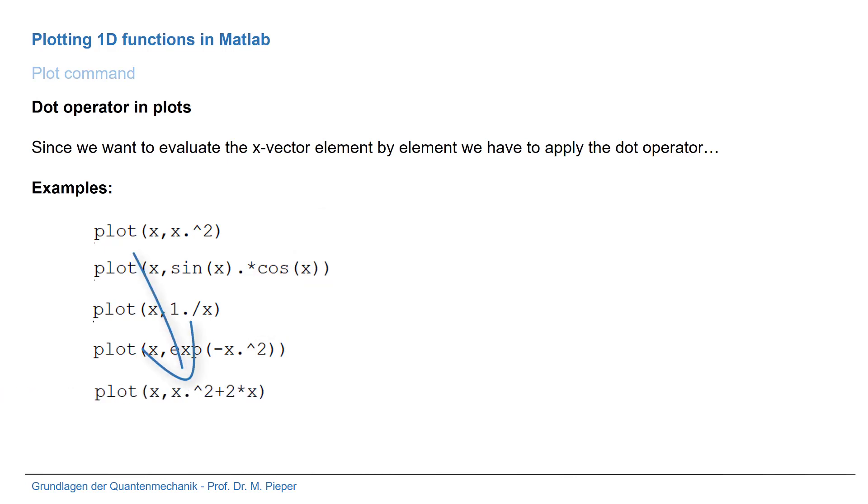When combining expressions like a polynomial, we need the dot operator for the powers. If you add something, no dot operator is needed because you can simply add vectors. When multiplying with a number, you also don't need a dot operator because it's a usual vector operation.